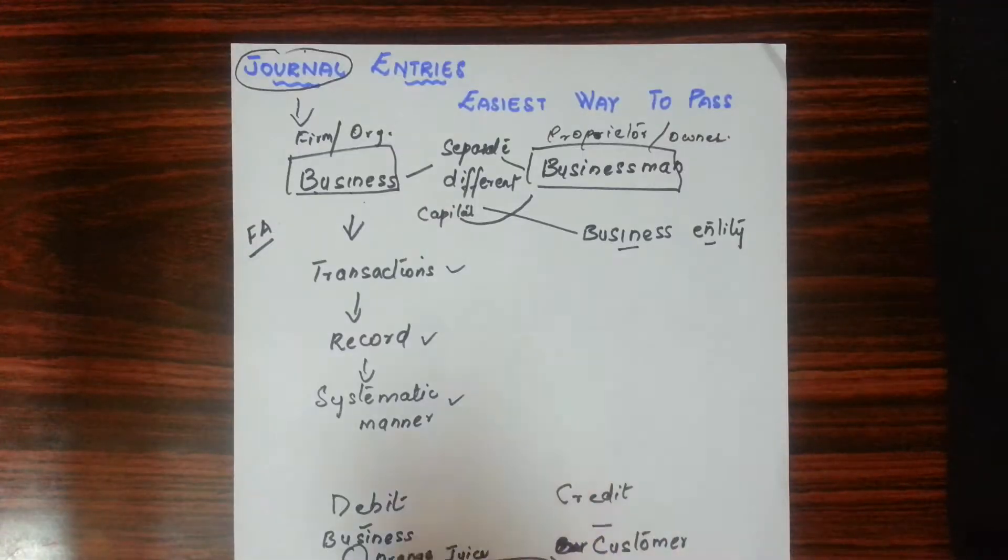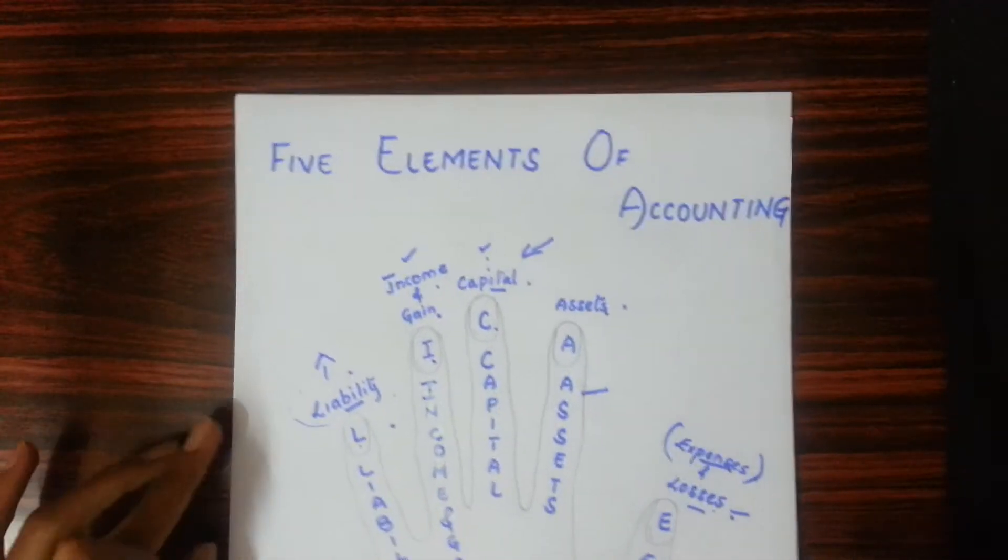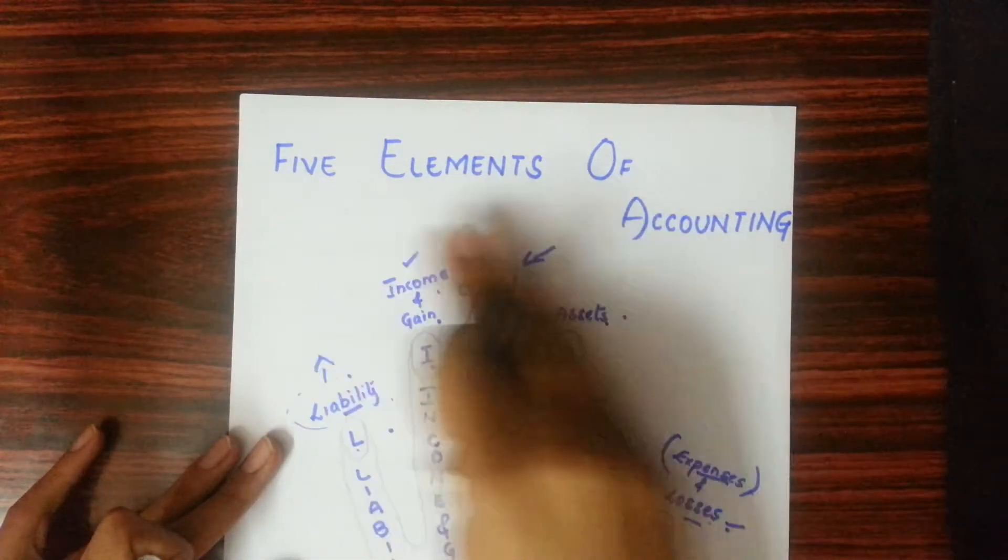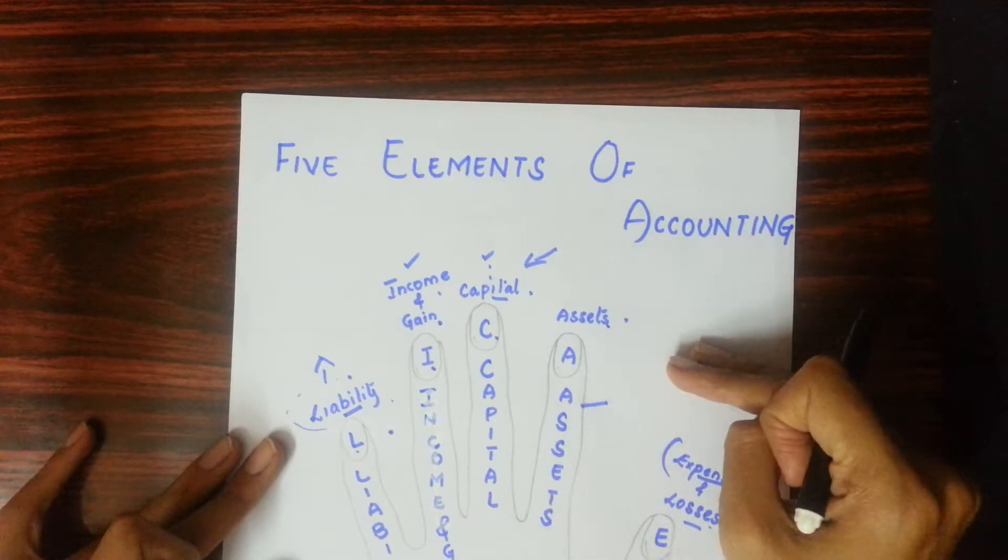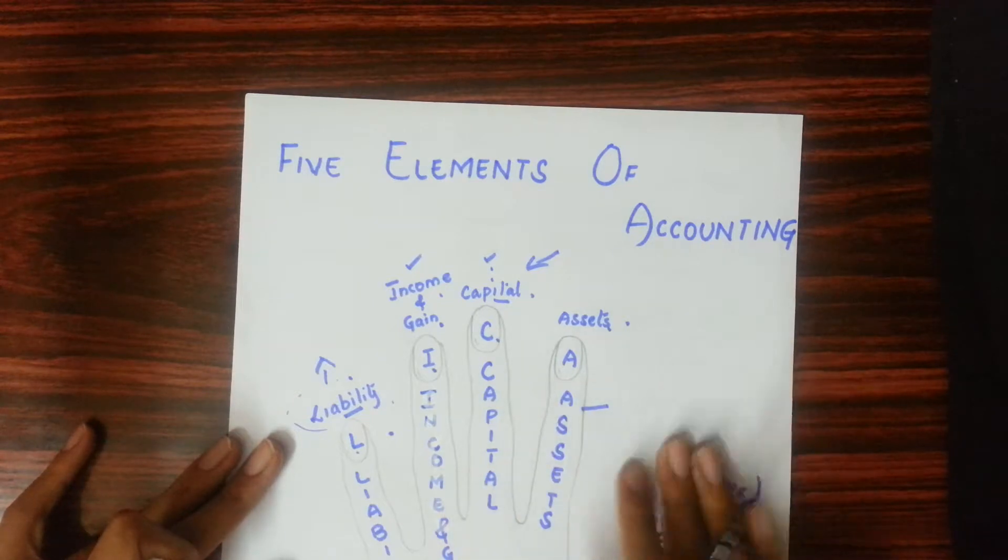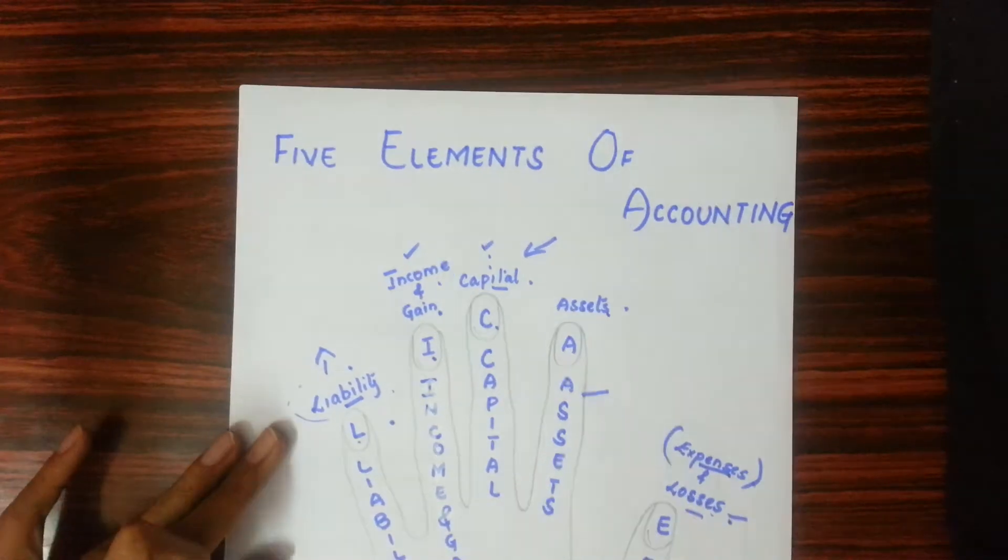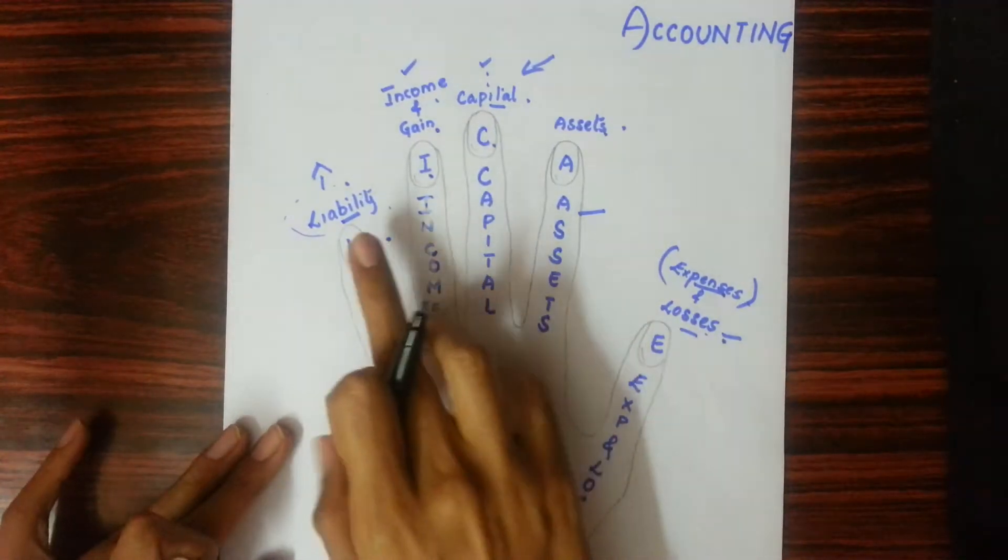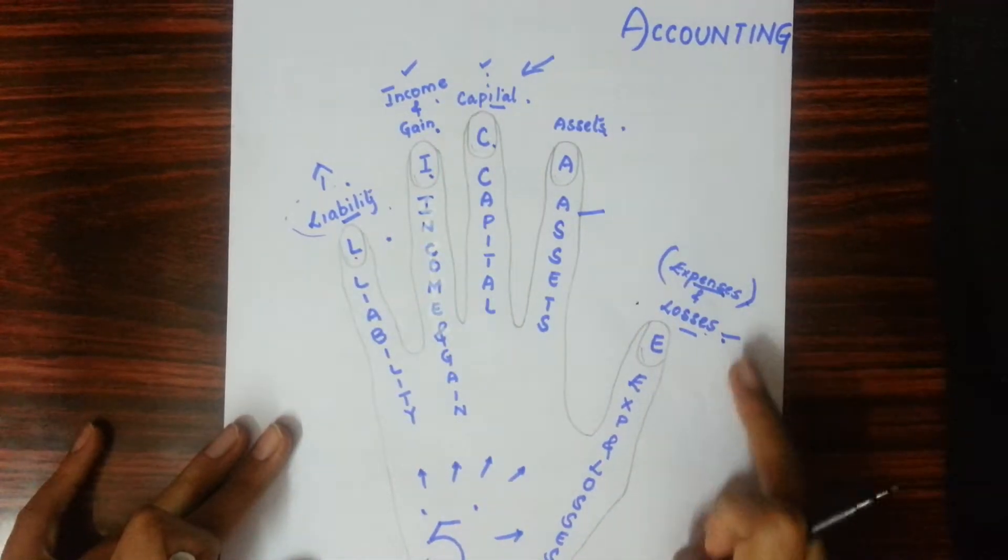Then I will tell you one main thing to remember in accounting - five elements of accounting. There are five such things which will be useful in journal entries, financial accounting, bank reconciliation statement, bill of exchange, subsidiary books, everything. Those are the five elements of accounting. What are these five elements? Liability, Income and gain, Capital, Assets, Expenses and losses. These five elements.